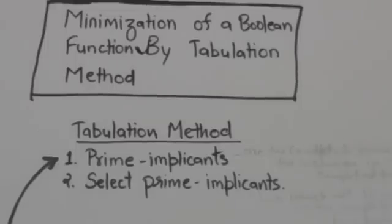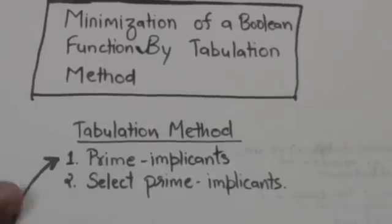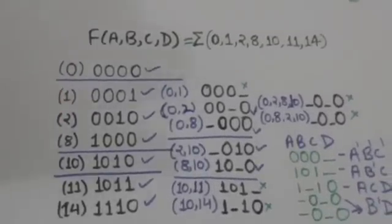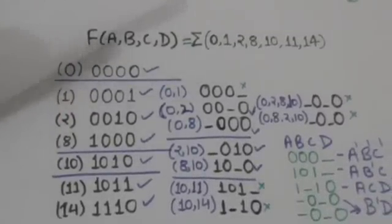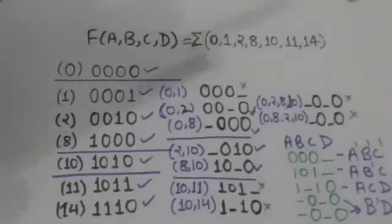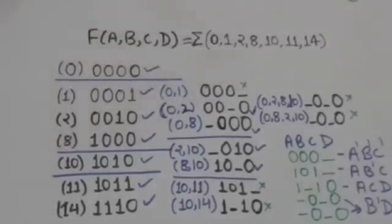After finding prime implicants, we select which ones will be included in the simplified function. Now suppose there is a function f of four variables a, b, c, and d, and it is the sum of minterms m0, m1, m2, m8, m10, m11, and m14.